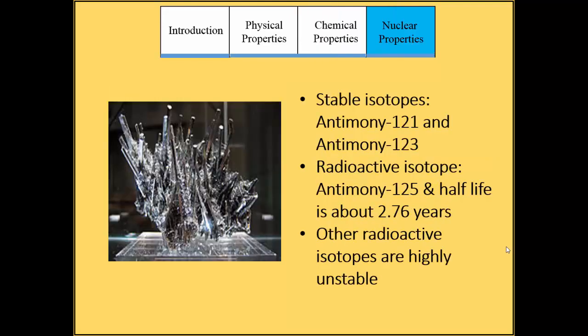Two naturally occurring stable isotopes are antimony-121 and antimony-123. The radioactive isotope antimony-121 has a half-life of about 2.76 years, and there are several other isotopes of antimony, but they are highly unstable. Tenantillium decays into antimony using beta-minus and beta-plus decay.